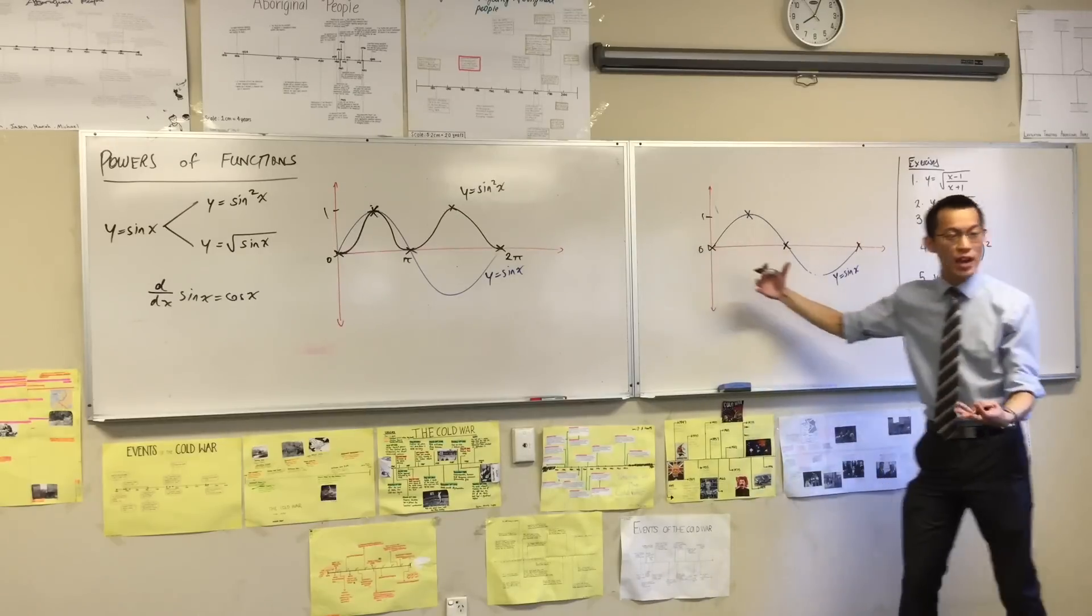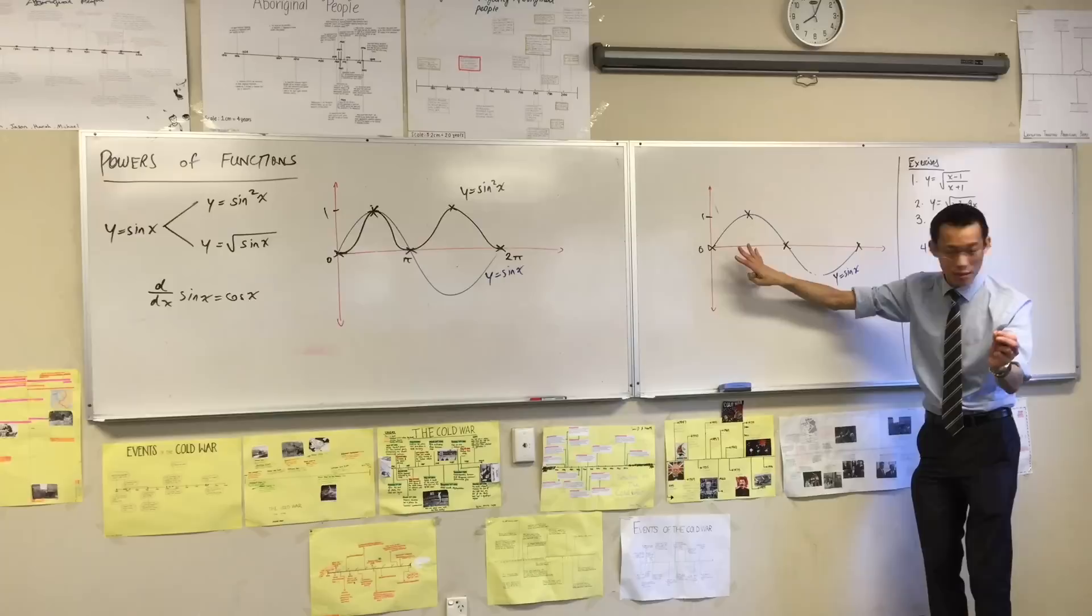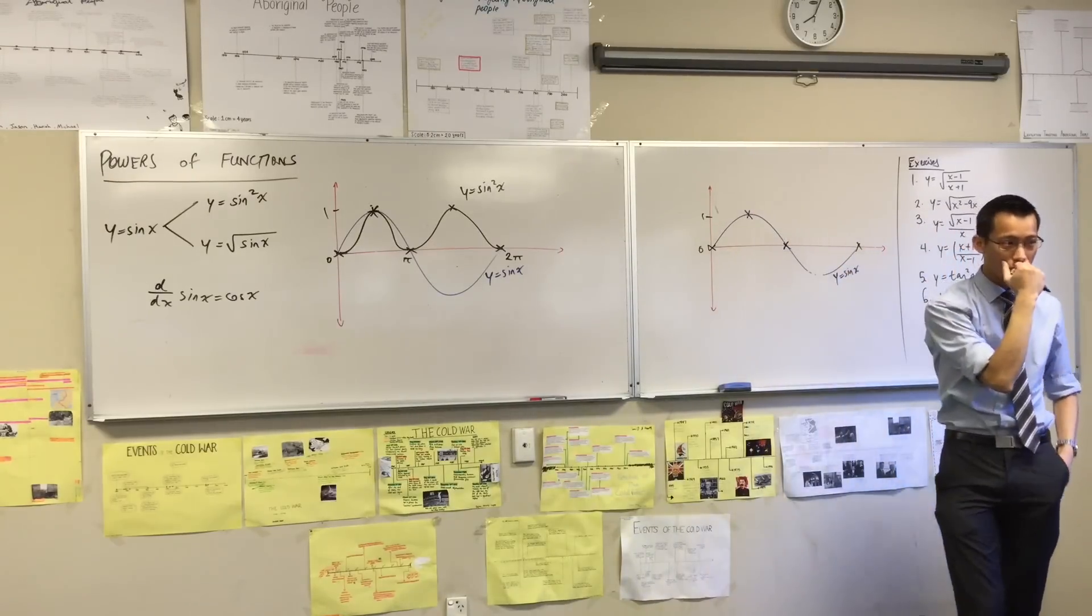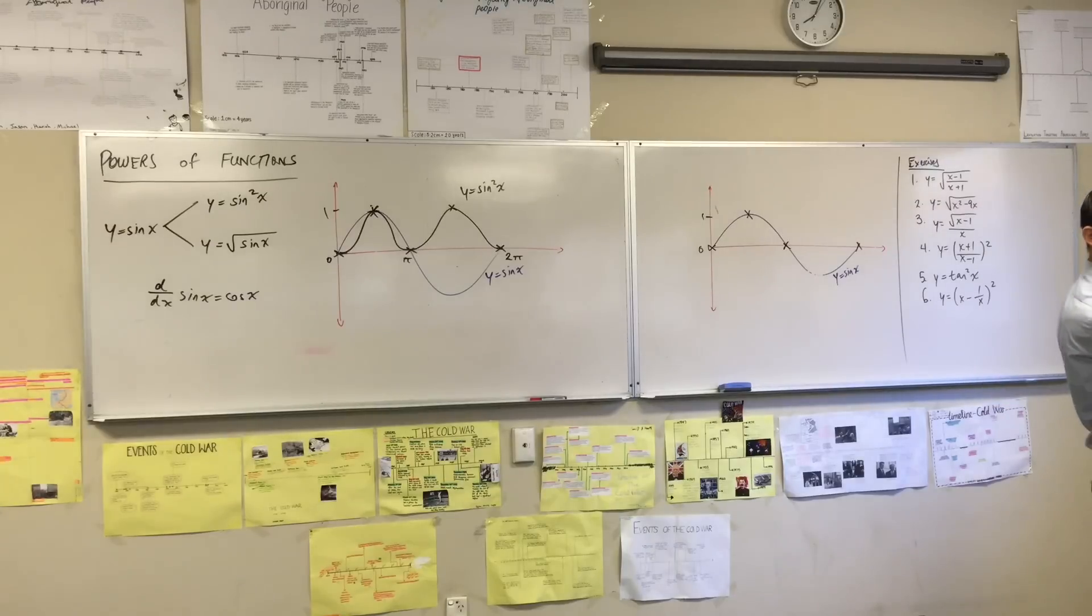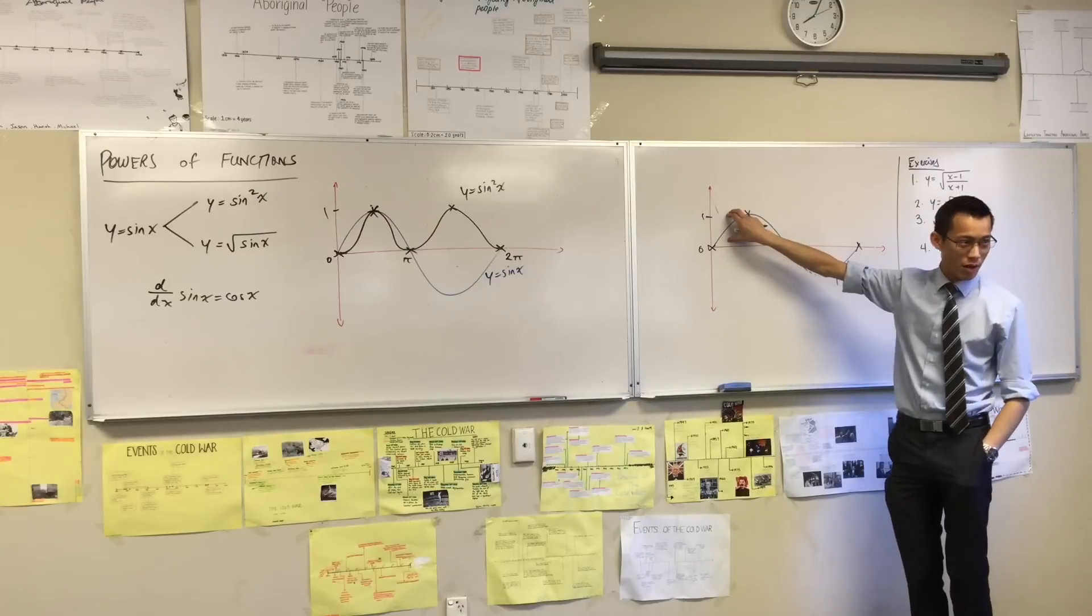Okay, so the square root of sin x will always be above this blue line over here. What is it that tells me it's always going to be above? Definitely not. Just barely understand. Because these values are all between 0 and 1, right?